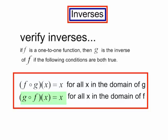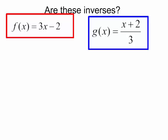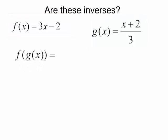Let's use this in a problem. Are these inverses? I have f of x is equal to 3x minus 2 and I have g of x is equal to x plus 2 over 3. I am first going to find f of g of x. So we will bring down our f and we will plug in g of x, which is x plus 2 over 3.